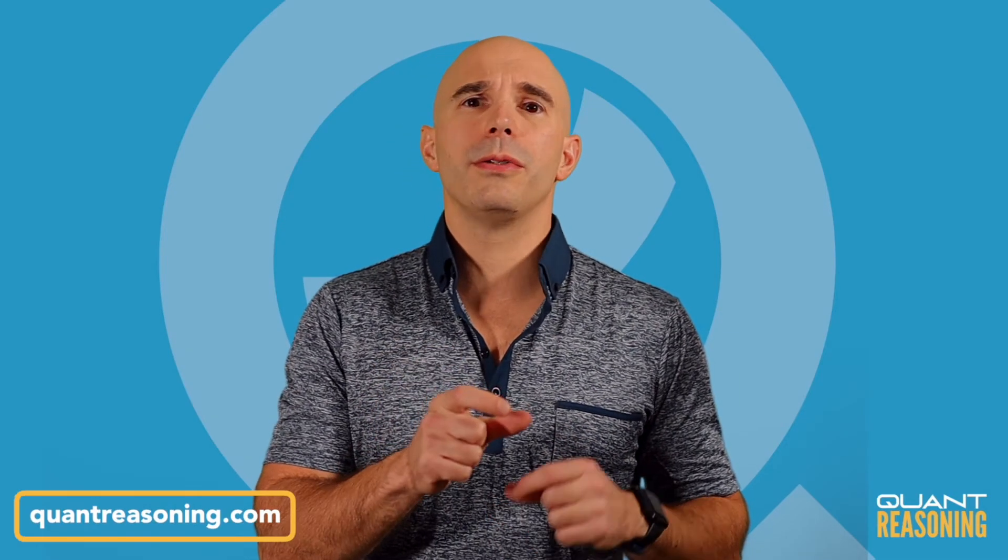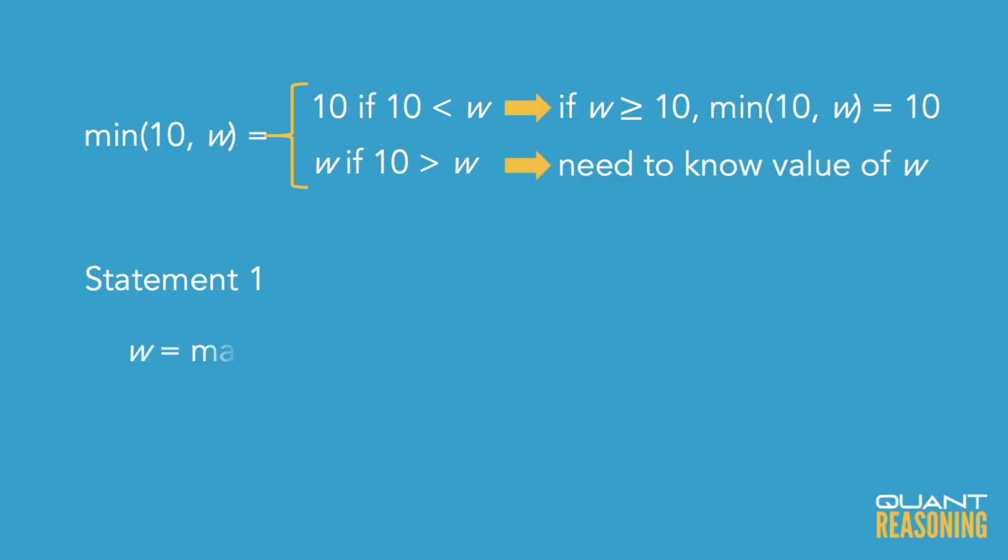Now, I like statement one because it's telling us that w is the bigger of the two numbers, 20 and z. So if z is a small number below 20, then w is 20. And if z is a big number greater than 20, then w is z. So from that, I can infer that w is at least 20.